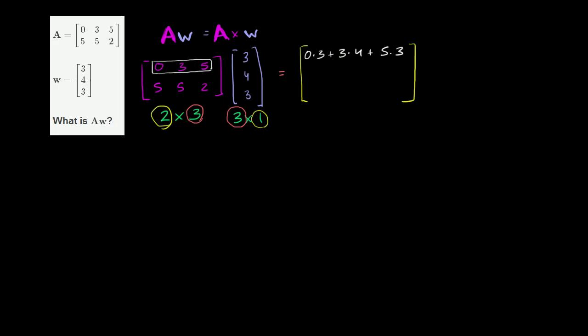Now, the second entry right over here is going to be the second row here. Essentially, the dot product of that with this vector. And if you don't know what the dot product is, I'm essentially about to do that. It's going to be 5. You take each corresponding term, take their product, and then add up everything together. So you have 5 times 3 plus 5 times 4 plus 2 times 3.